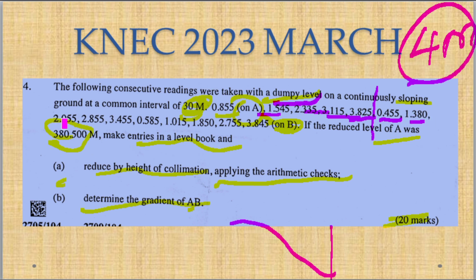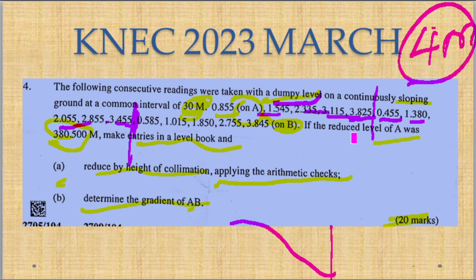The values start to fall again. When it reaches 3.455 we have another drastic change of reading, meaning the staff was not visible because it was the four-meter staff. Here we have another change point. So we have two change points — two changing positions of the instrument. A four-meter staff is being used, and where visibility ceases we change the instrument.